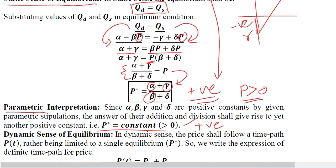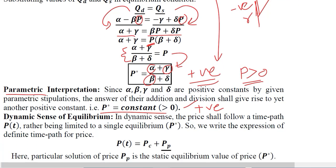Now let's talk about the dynamic sense, because we are actually studying the dynamic side of equilibrium. We start with the static equilibrium that we just obtained — it is the starting point — and using this we can build the dynamic sense of equilibrium. In dynamic analysis, we have a time path where the dependent variable depends on time. The equilibrium price is dependent upon the variable time, and if we can establish this, we have done dynamic analysis of the equilibrium price.